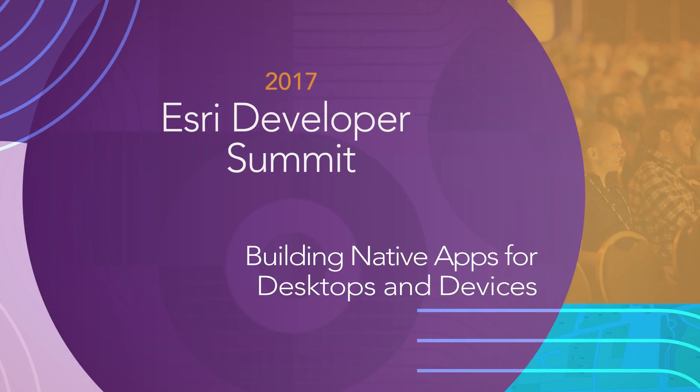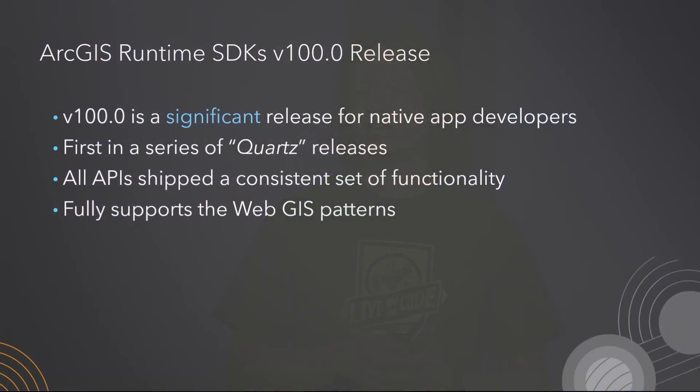Moving to native app development. Last year in November, the ArcGIS Runtime version 100 was released, and that was a very significant release. It's the runtime built on a whole new architecture. It unifies a lot of the functionality across all the different platforms we support, with a unified conceptual model across all APIs. It really complements the web GIS pattern of development, so you can build applications that extend as well as complement the platform.